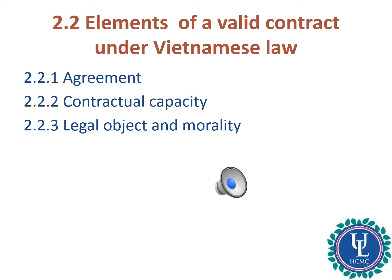As can be seen from this slide, under Vietnamese Law, there are three elements of a valid contract. In comparison with those under U.S. Law, the elements of a valid contract under Vietnamese Law include agreement, contractual capacity, legal objects, and morality. So we can see that under Vietnamese Law, consideration is not required as an essential element of a valid contract.